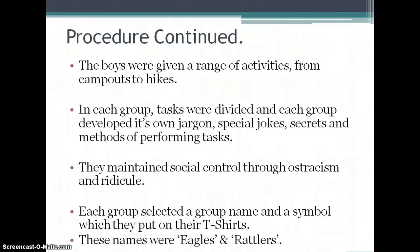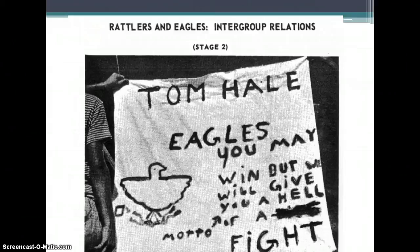During this five days, the groups were given a range of activities from campouts to hikes. Each group developed its own jargon, in-jokes, and secrets, and maintained social control through ostracism and ridicule — basically, 11-year-old kids being mean to people who didn't fit in. They then picked the names Eagles and Rattlers, and came up with their own mottos.